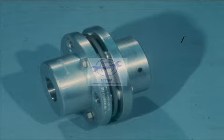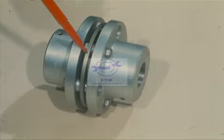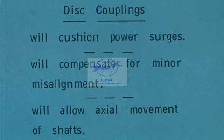The third type of flexible coupling is the disc coupling. This coupling does not require any lubrication whatsoever, since there is no real metal-to-metal friction. The advantages of this type of coupling are built into this shim pack, or disc, as it is called. This pack of thin, flexible metal plates allows the coupling to move in various directions without seriously affecting its operation. The disc coupling will cushion light power surges, will compensate for minor misalignment, and will allow a small degree of axial movement of the shaft.